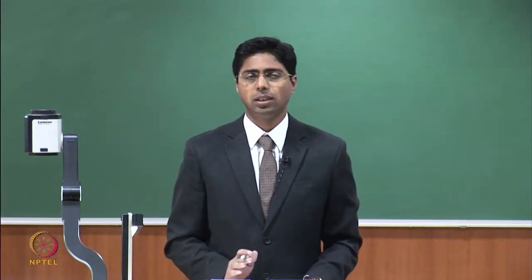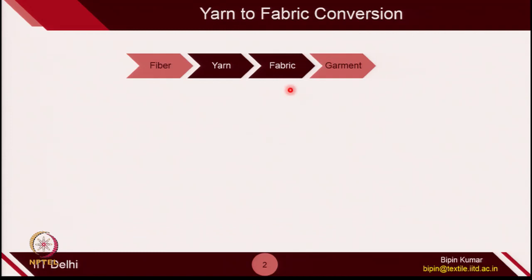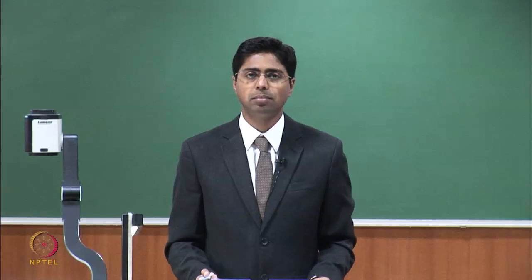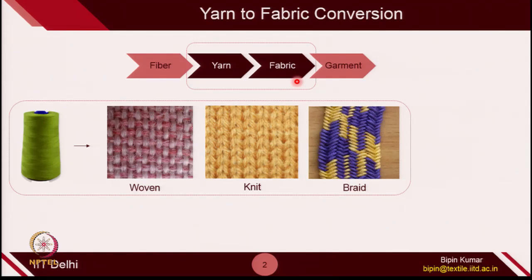Knitting is nothing but a process of converting yarn to fabric. When we talk about yarn to fabric conversion, we have 4 basic processes in textile where we convert fiber to yarn, yarn to fabric, and fabric to garment. Knitting basically relates to the conversion of yarn to fabrics. We have different means by which a single individual yarn can be converted to different types of fabric structure, and knit is one of those structures.